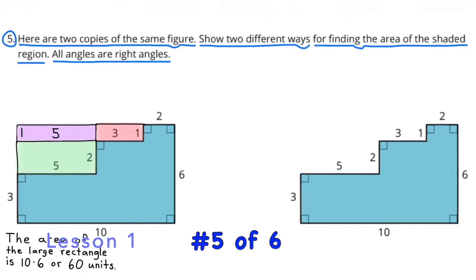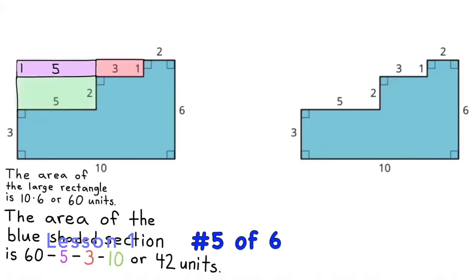The area of the large rectangle is 10 times 6 or 60 units. The area of the blue shaded section is 60 minus 5 minus 3 minus 10, or 42 units.